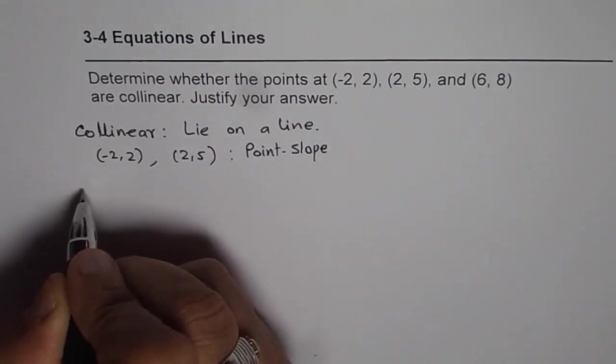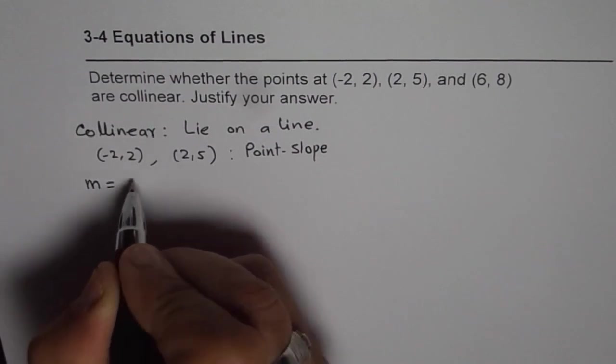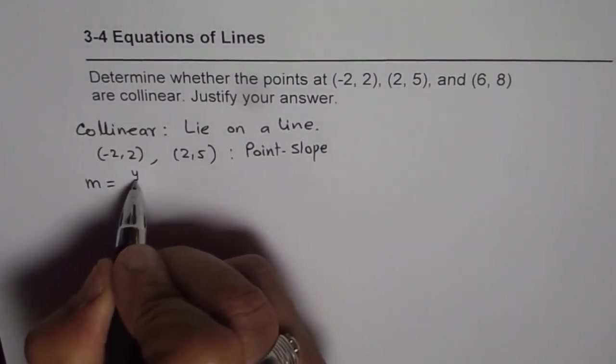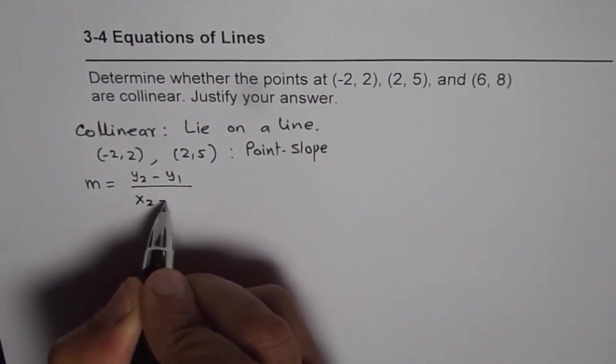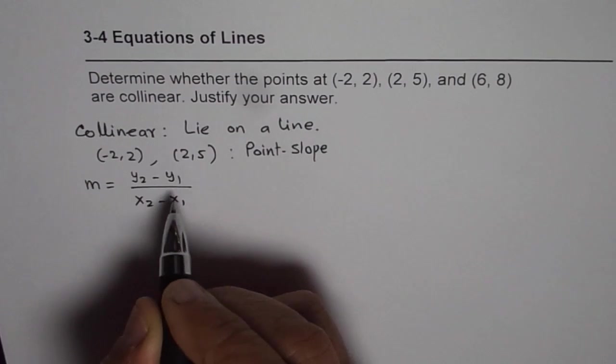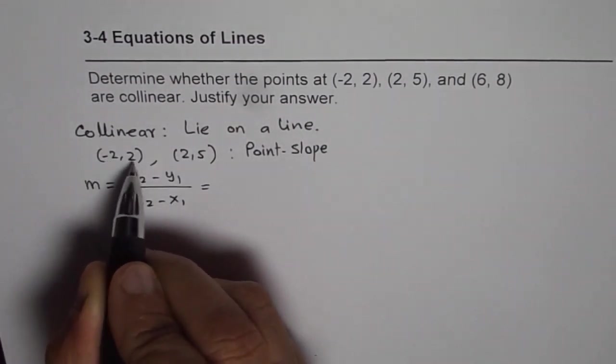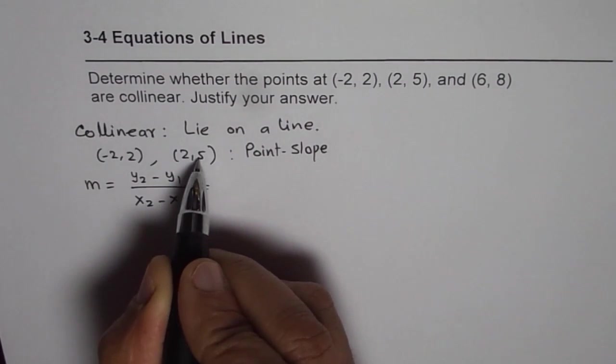In that equation first we need to find the slope. We already know the points. So the slope using the slope formula is y2 minus y1 divided by x2 minus x1.